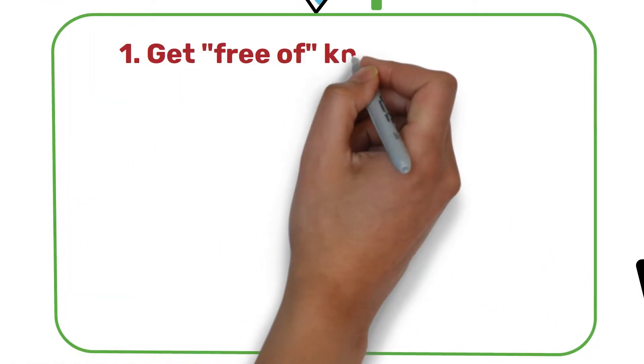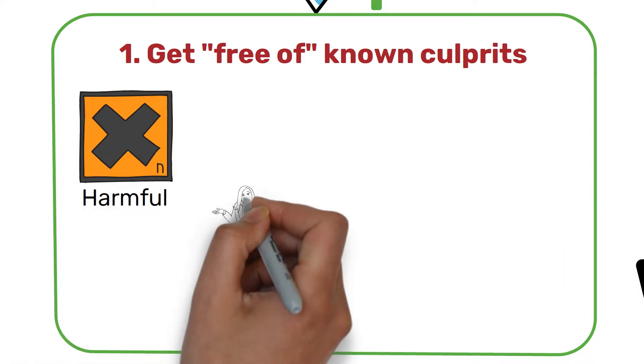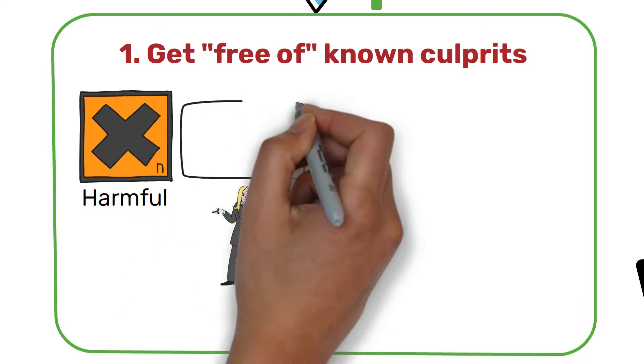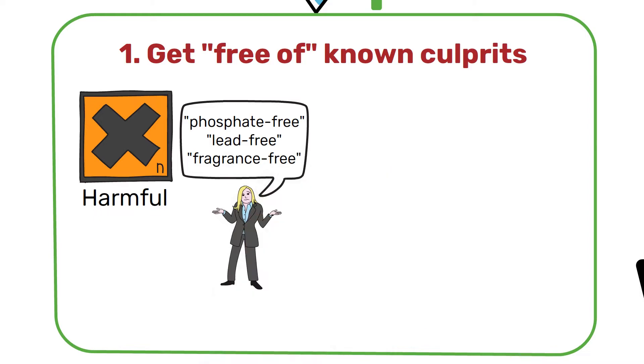Step 1: get free of known culprits. A move towards eco-effectiveness means we have to say no to substances that are widely recognized as harmful. In our daily life we are so used to hearing products advertised as phosphate-free, lead-free and fragrance-free.